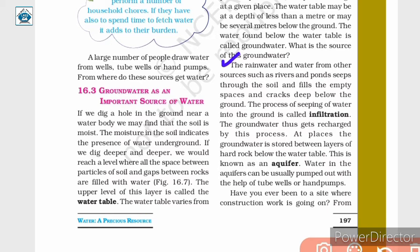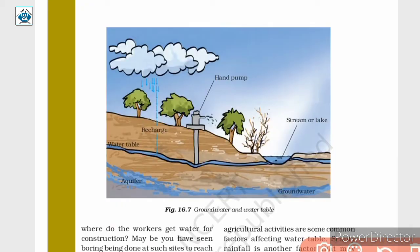Water in the aquifers can be easily pumped out with the help of tube wells or hand pumps. The process by which water accumulates into the ground by travelling through the soil pores is called infiltration. As water falls on the earth, it travels along the surface and gets accumulated at different places like lakes, rivers, seas, oceans, and under the ground. That is how the amount of water is regulated on the earth.